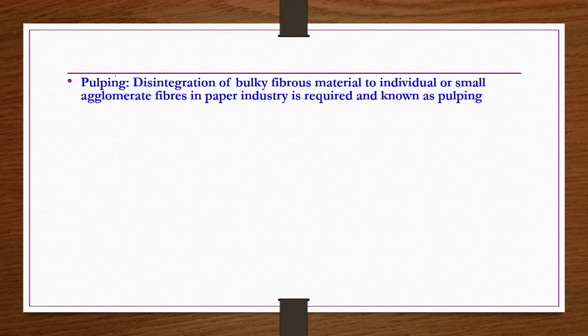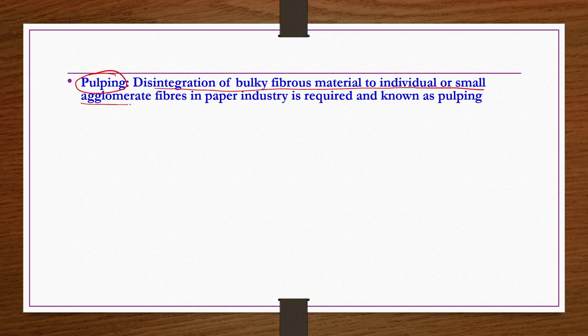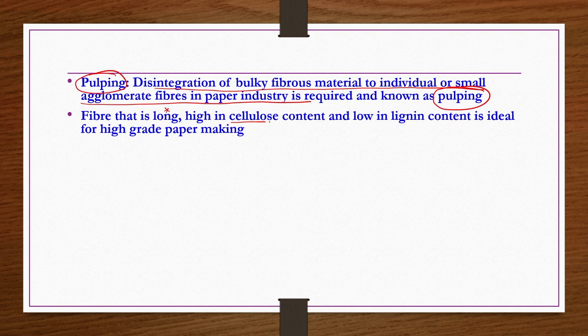Pulping is very much necessary in paper industry. It is the disintegration of bulky fibrous materials to individual or small agglomerate fibers. That disintegration of bulky fibrous material into individual or small agglomerates is known as pulping. If pulping is successfully done, the paper quality will be better. Fiber that is long, high in cellulose content, and low in lignin content is very ideal for high grade paper making.